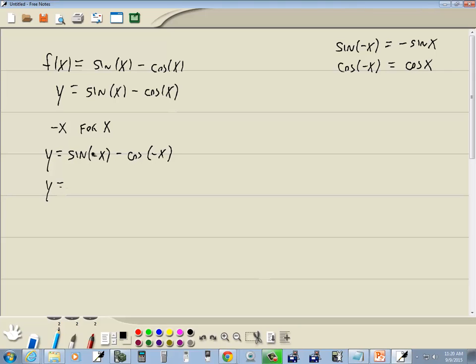I'm going to take this negative and put it out in front. So we're going to have negative sin(x) minus, and then this just becomes positive, so that's cos(x).